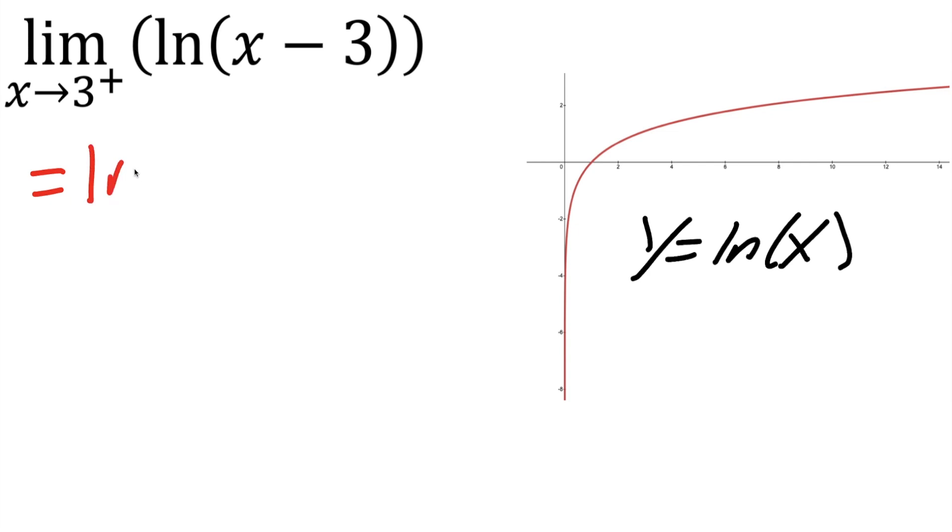We could say we have ln 3.0000 repeating zeros 1 minus 3. And so if you were to subtract 3 point with infinite number of zeros and a 1 minus 3, you're going to get ln parentheses 0 point so many zeros 1. So it's not 0, but it's slightly greater than 0.